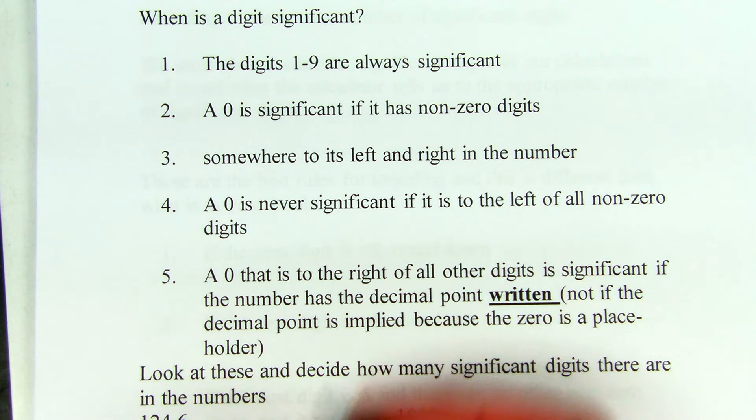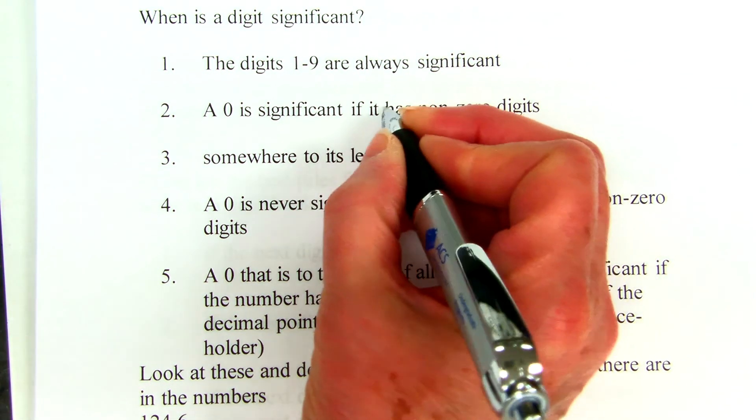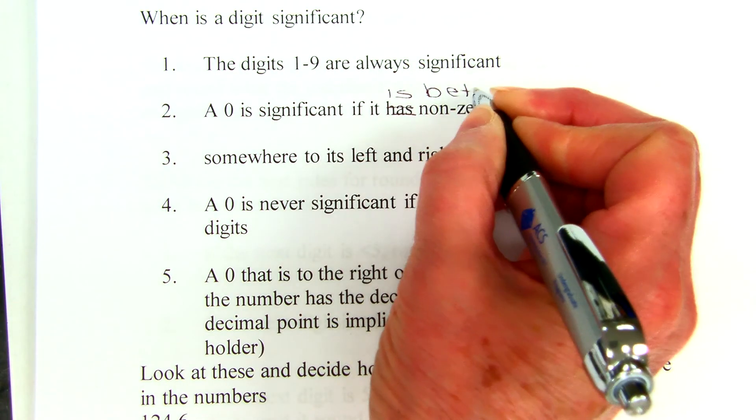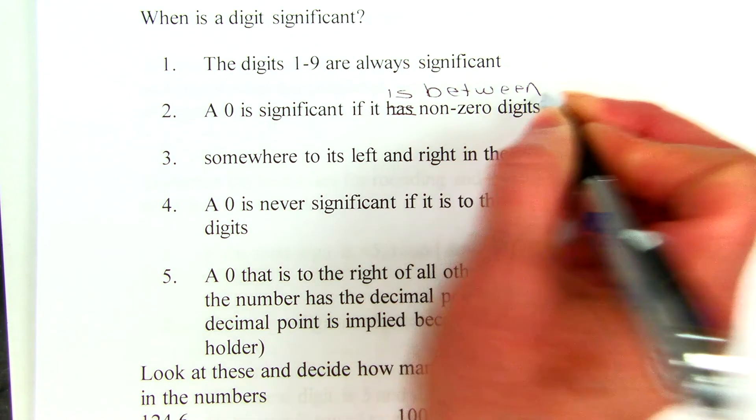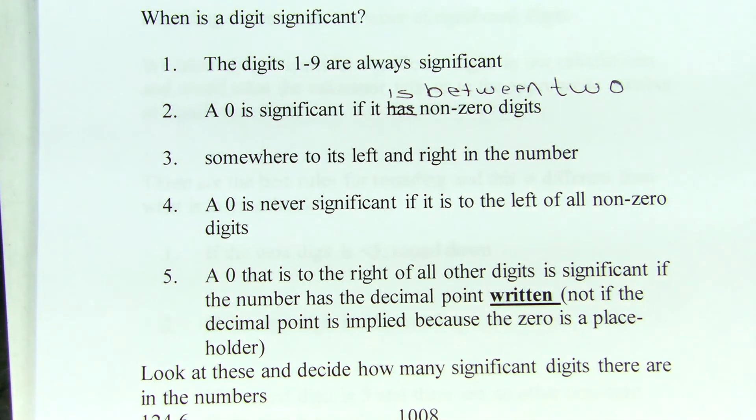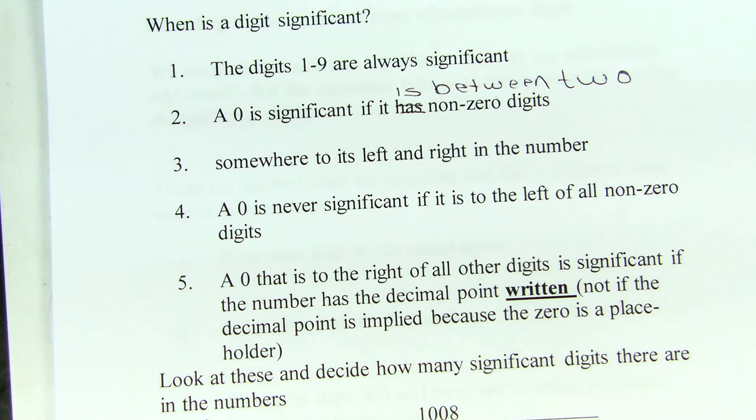That second rule is a mistake on the thing. It makes no sense. A zero is significant if it is between two non-zero digits. Sorry about that. That's an example of my poor typing skills.